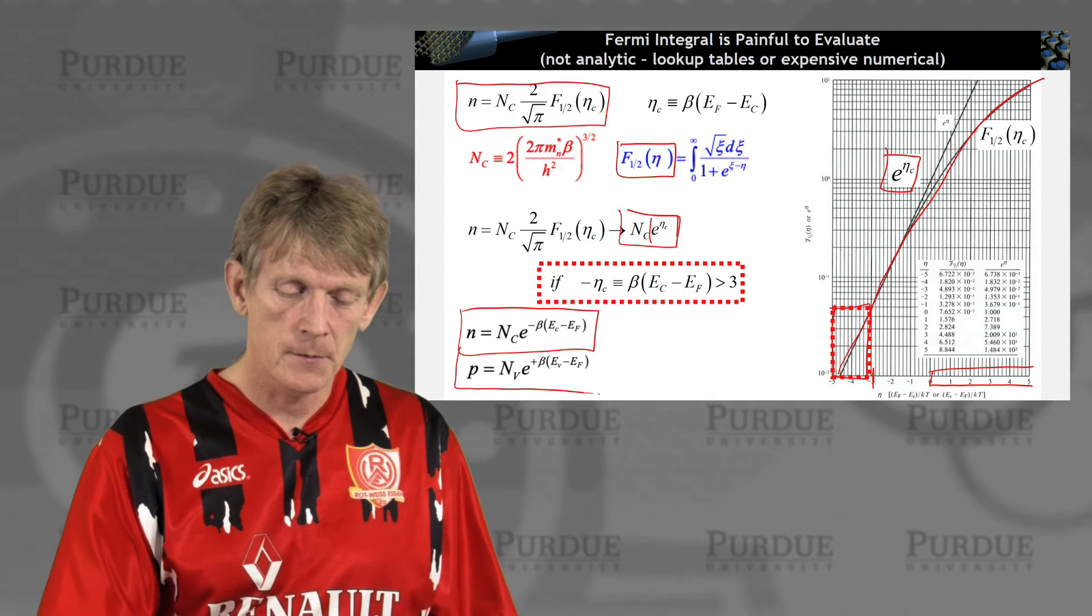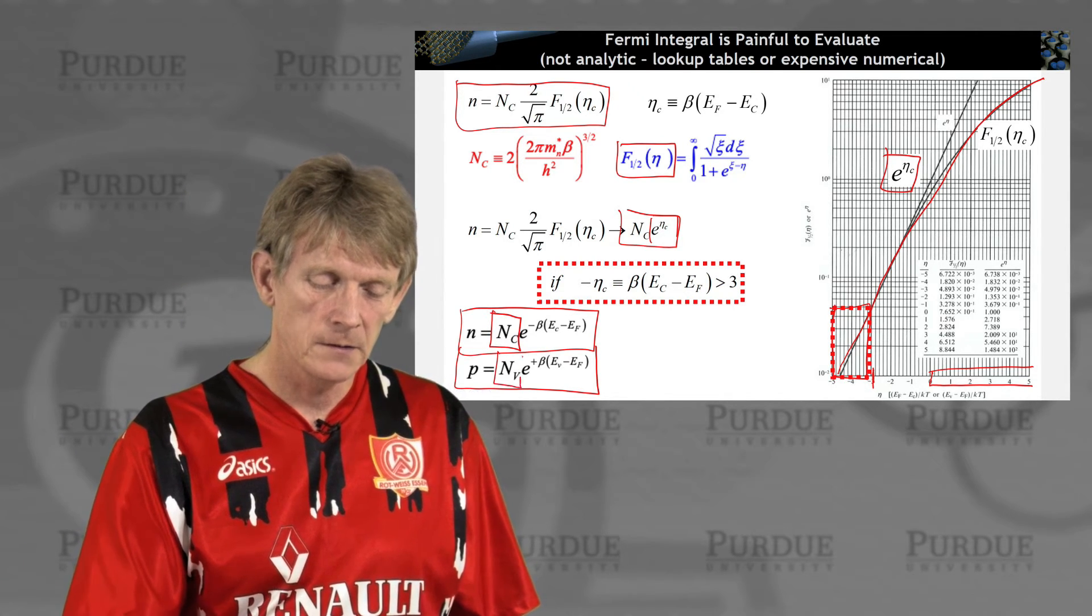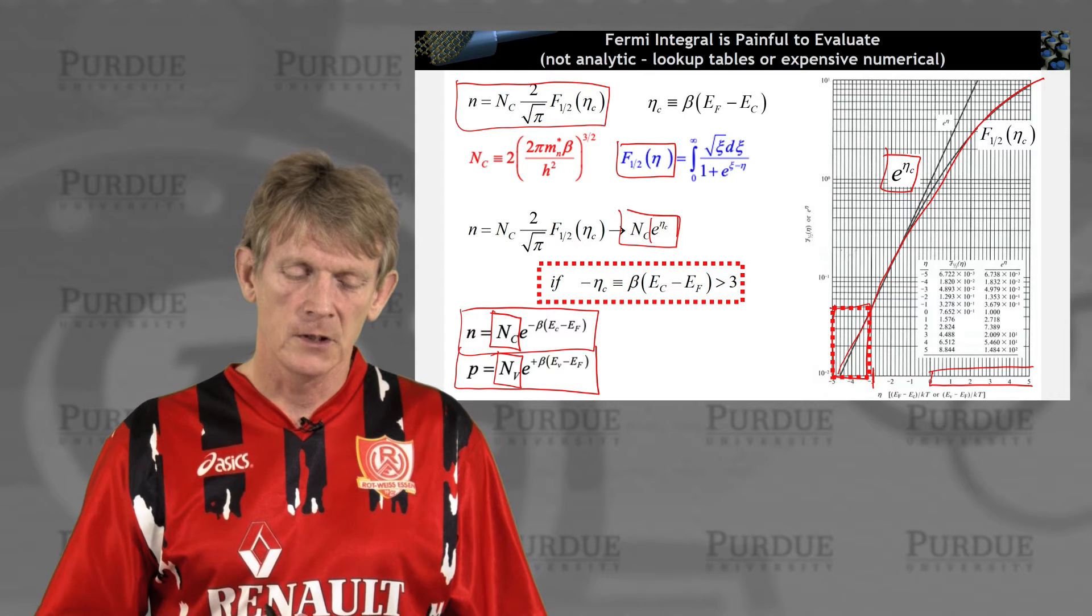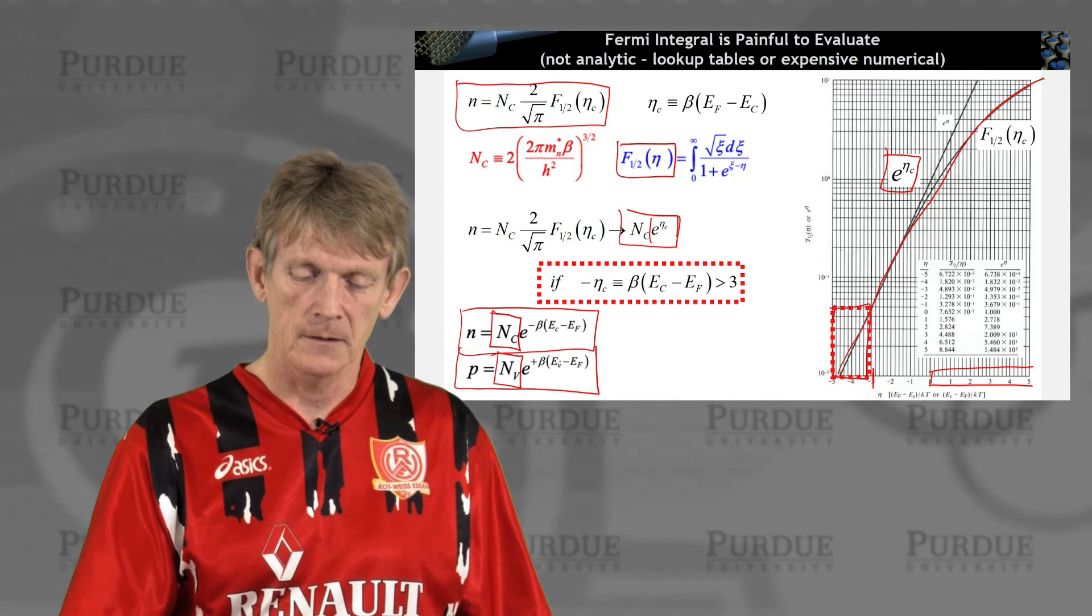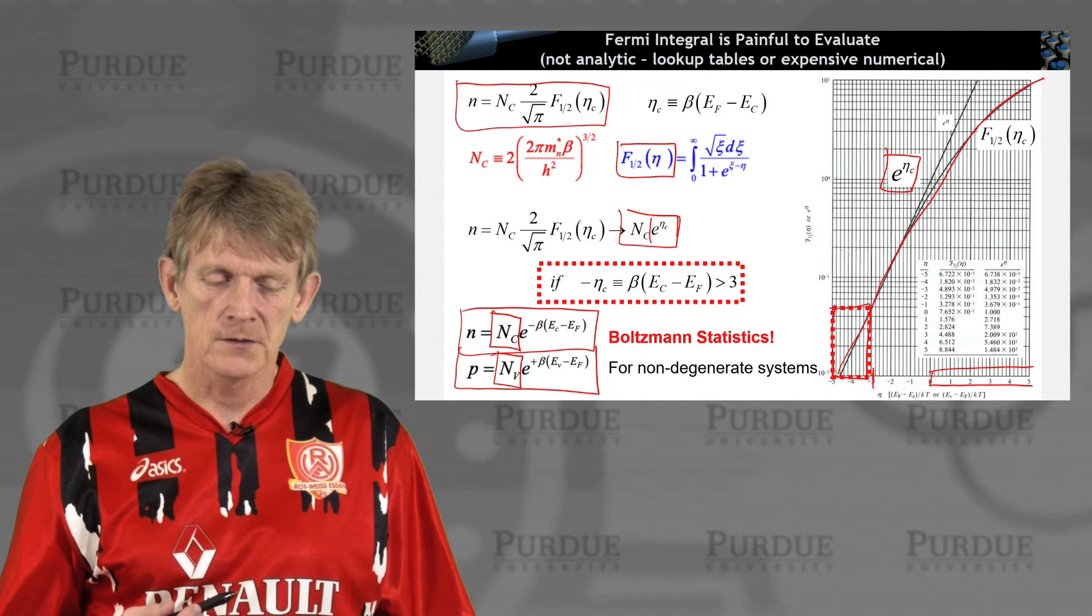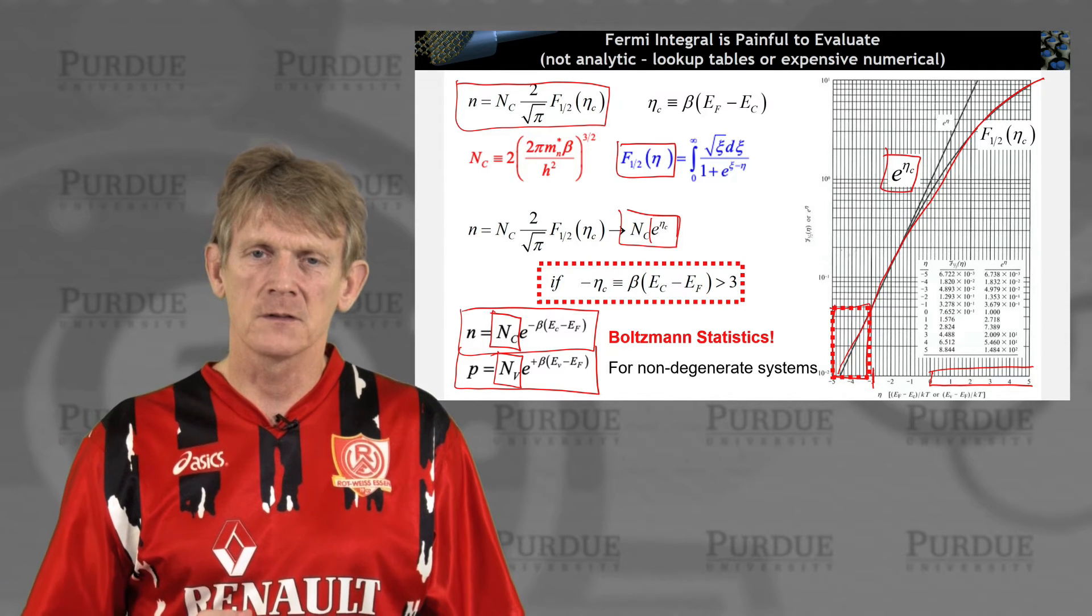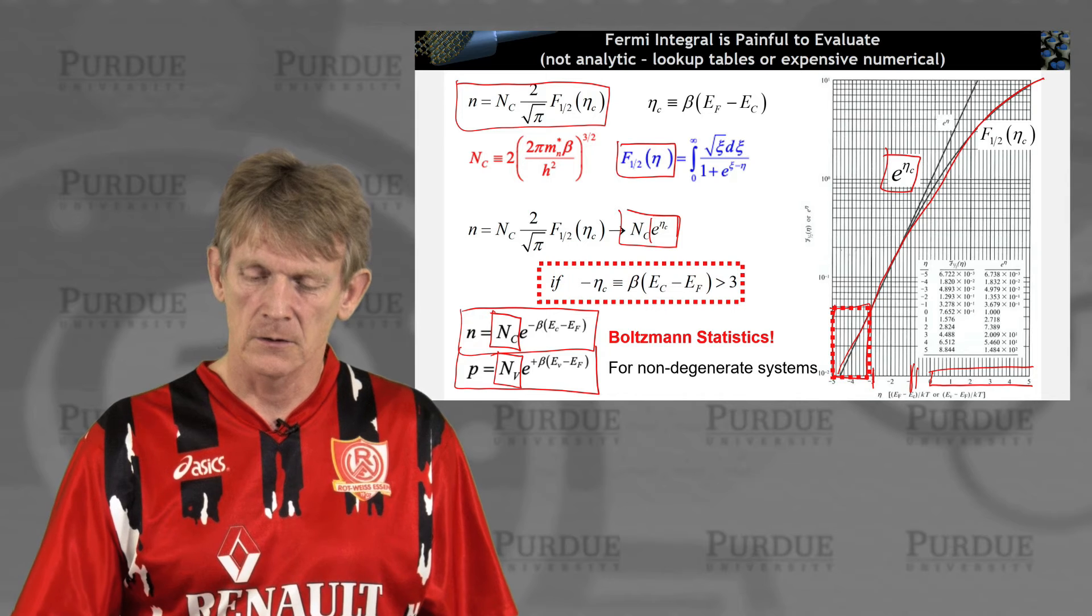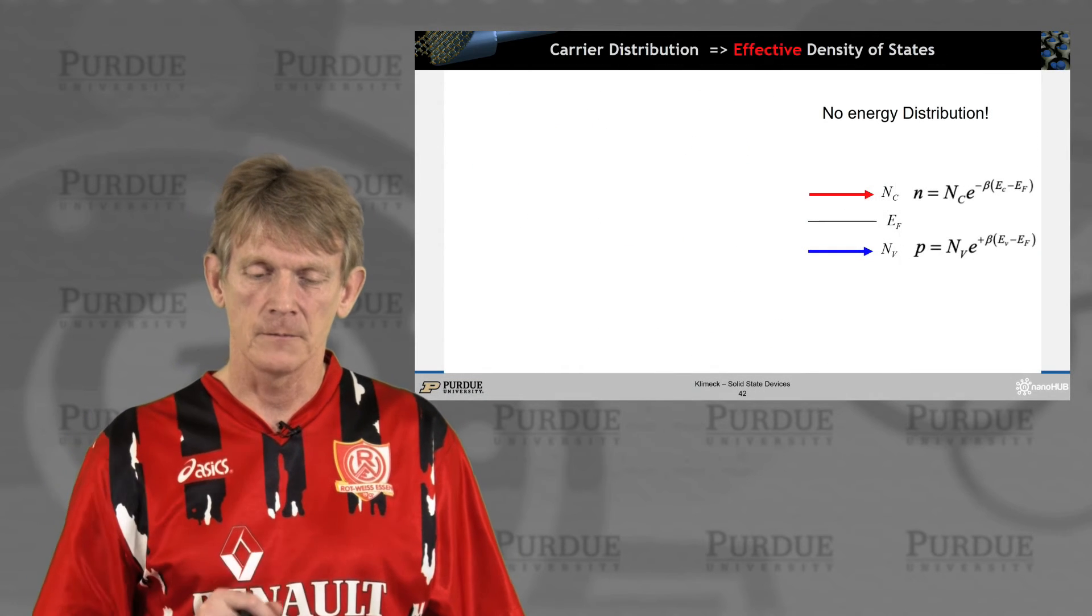For holes, you can derive the very same thing. So you end up having a single number that determines the number of electrons times some exponential that depends on the Fermi function and really the distance of the Fermi energy from the conduction band or the Fermi energy of the valence band. So really what you have here is Boltzmann statistics. You threw away the Fermi piece, and that works well if you are working in the tails of the Fermi function. And that is true for non-degenerate systems. Degenerate systems, we in general talk about when the Fermi function gets closer to the conduction band edge or even where the Fermi function is in the conduction band.